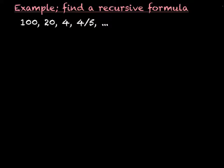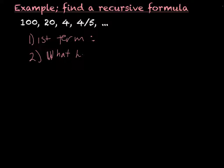In this next example, we want to find the recursive formula again. We need to first understand what is happening — find our first term, because that is my A sub 1. My first term is obviously the first number that comes, and that is 100. So that is going to be my A sub 1 term.